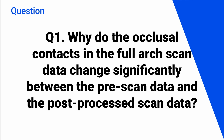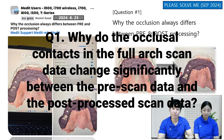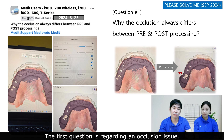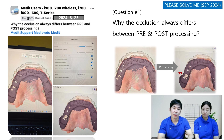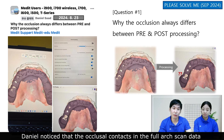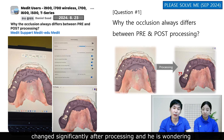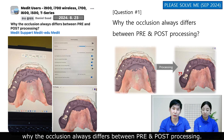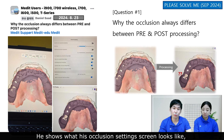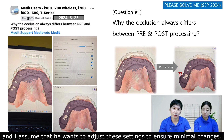Why do the occlusal contacts in the full-arch scan data change significantly between the pre-scan data and the post-processed scan data? The first question is regarding an occlusion issue. Daniel noticed that occlusion contact in the full-arch scan data changes significantly after processing, and he is wondering why the occlusion always differs between pre- and post-processing. He shows what his occlusion settings screen looks like, and I assume that he wants to adjust these settings to ensure minimal change.